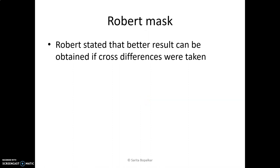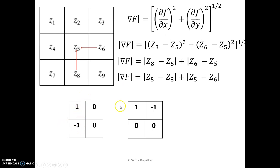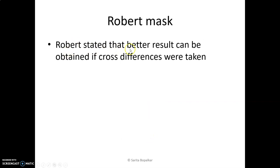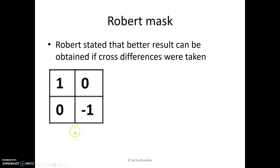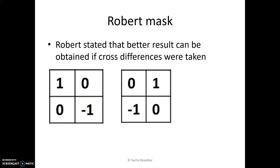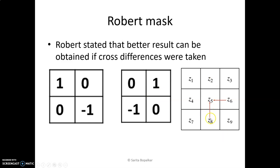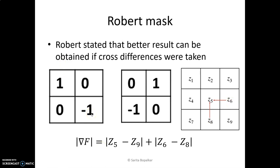The first method using the first derivative is the Robert mask. If you observe the mask we developed — this is the 1, minus 1 and 1, minus 1 — the x-directional mask and y-directional mask. For the x-directional mask, instead of taking the vertical difference, cross differences will give a better result. Similarly for y-direction, cross differences will give a better result. So the formula will be z5 minus z9 and z6 minus z8. These cross differences give a better result according to Robert.